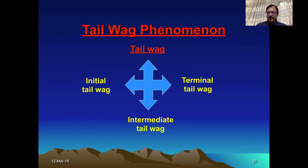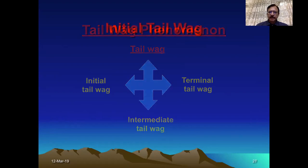The classical example of this tail wag phenomenon is shown by a spinning top. When you spin a top, initially it is unstable — it wobbles — and then it becomes steady with smooth flight. And in the end, when the velocity of the spinning top is reduced, it wobbles again. So these various unstable movements shown by the bullet are known as the tail wag phenomena.